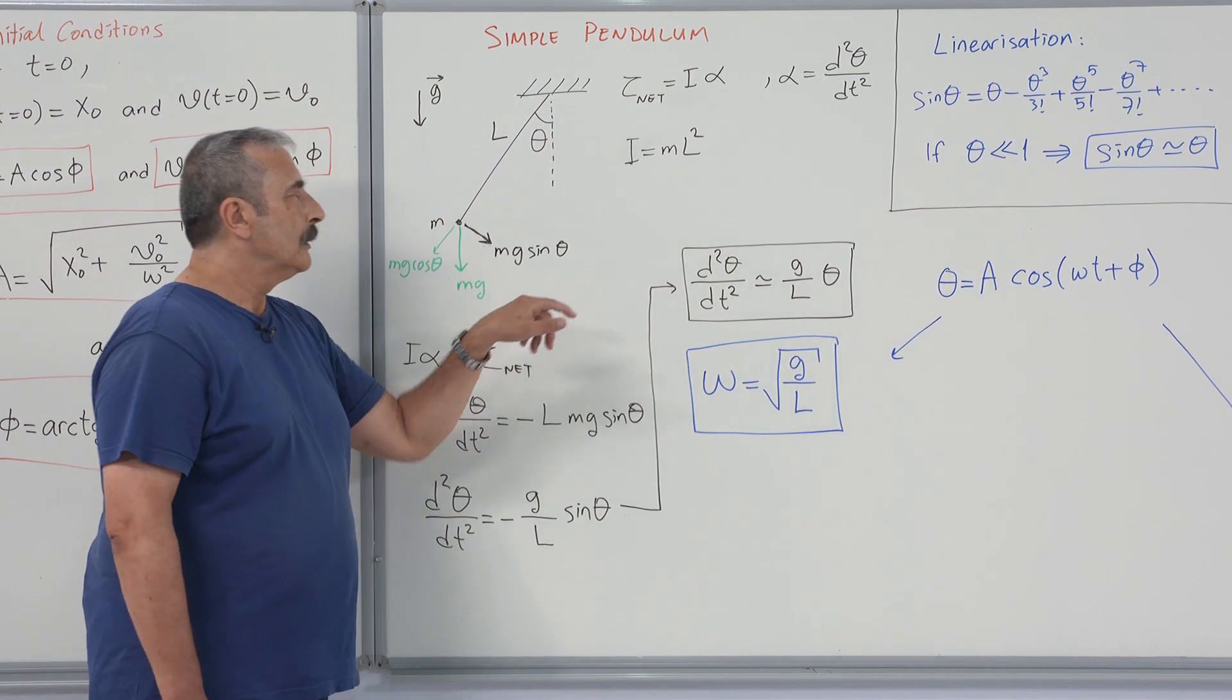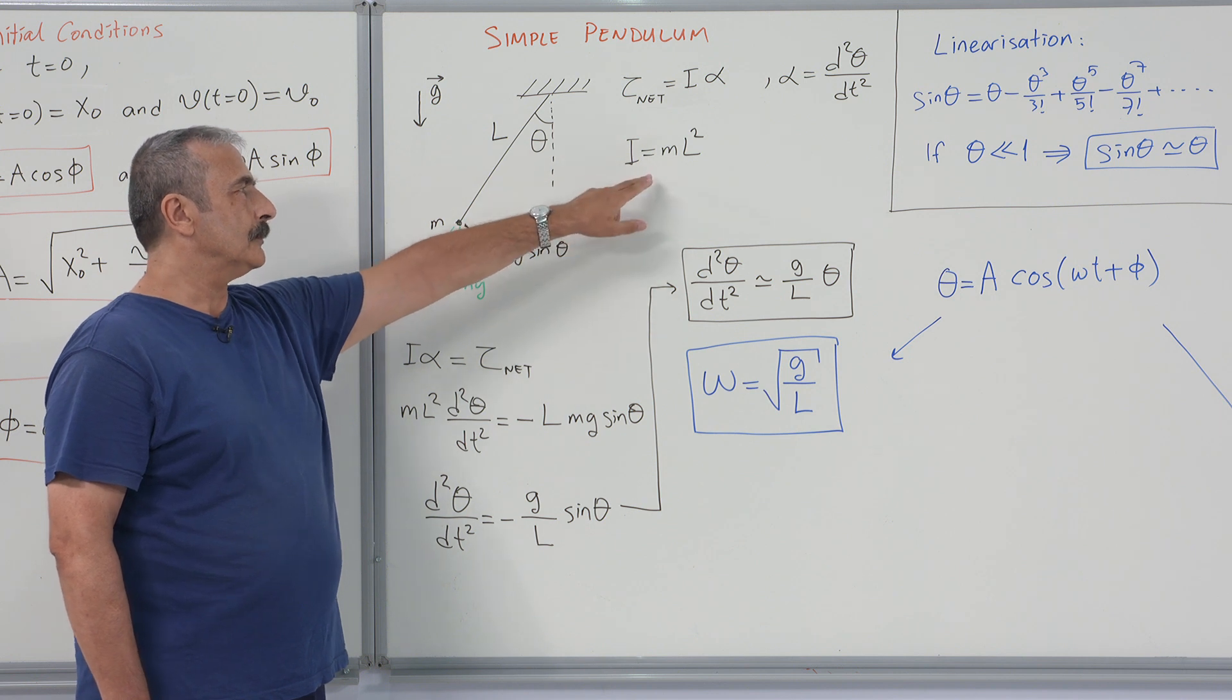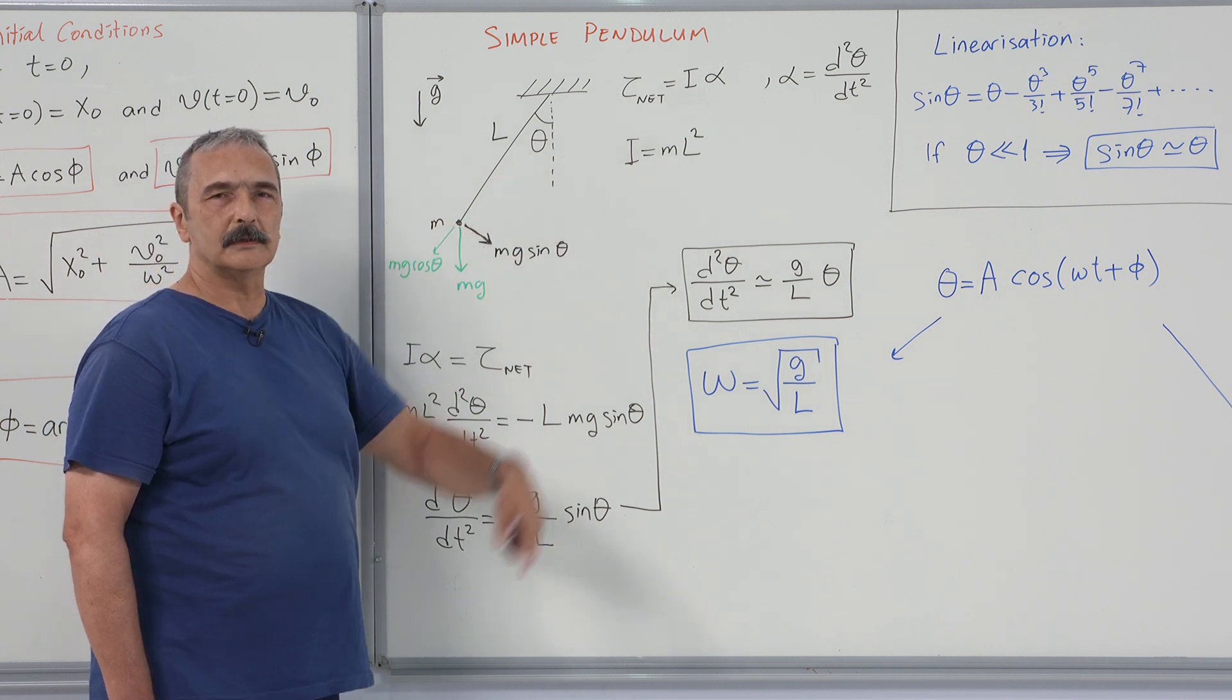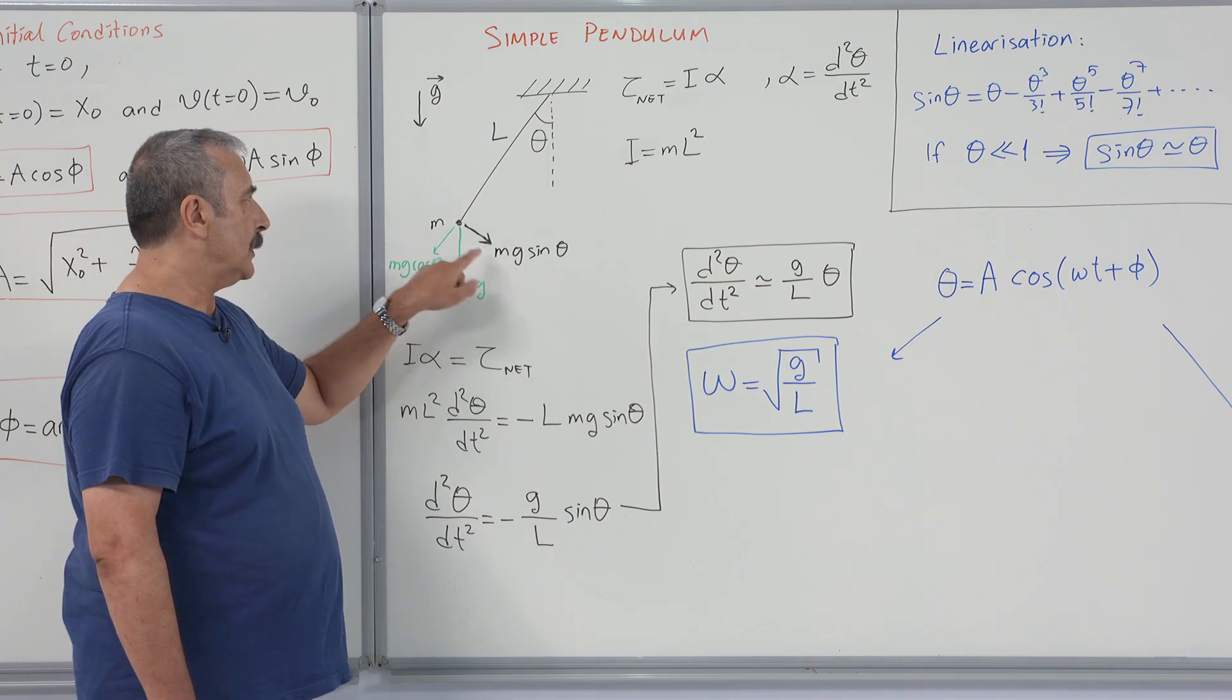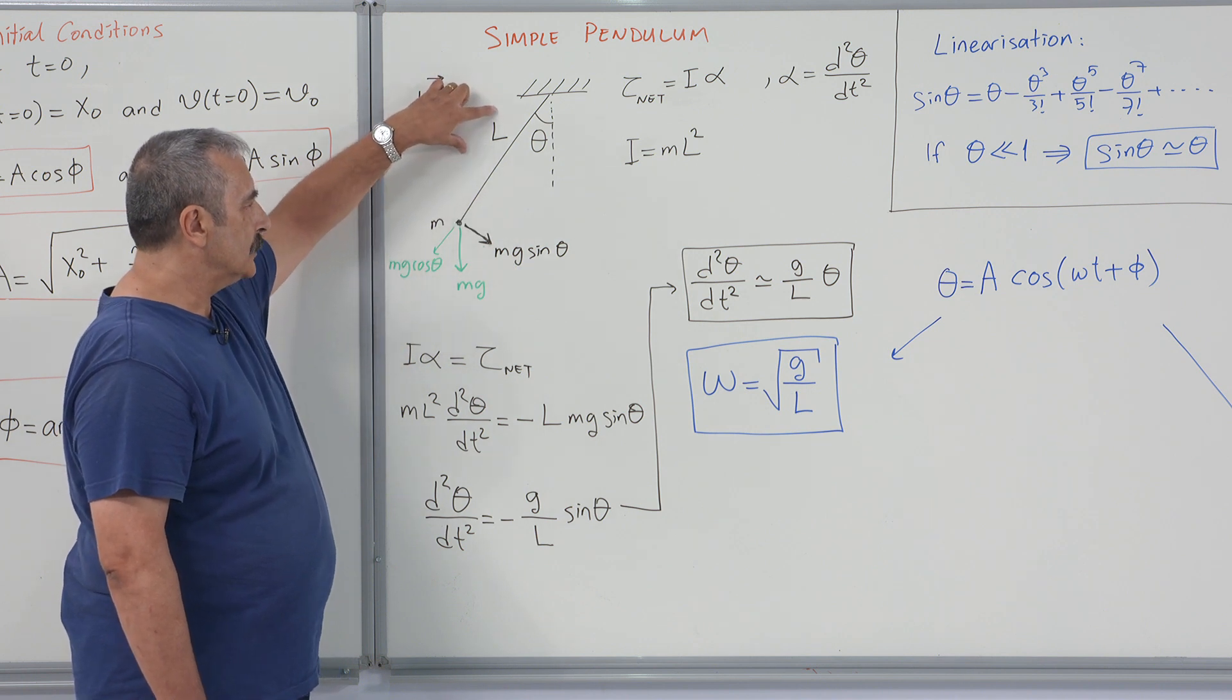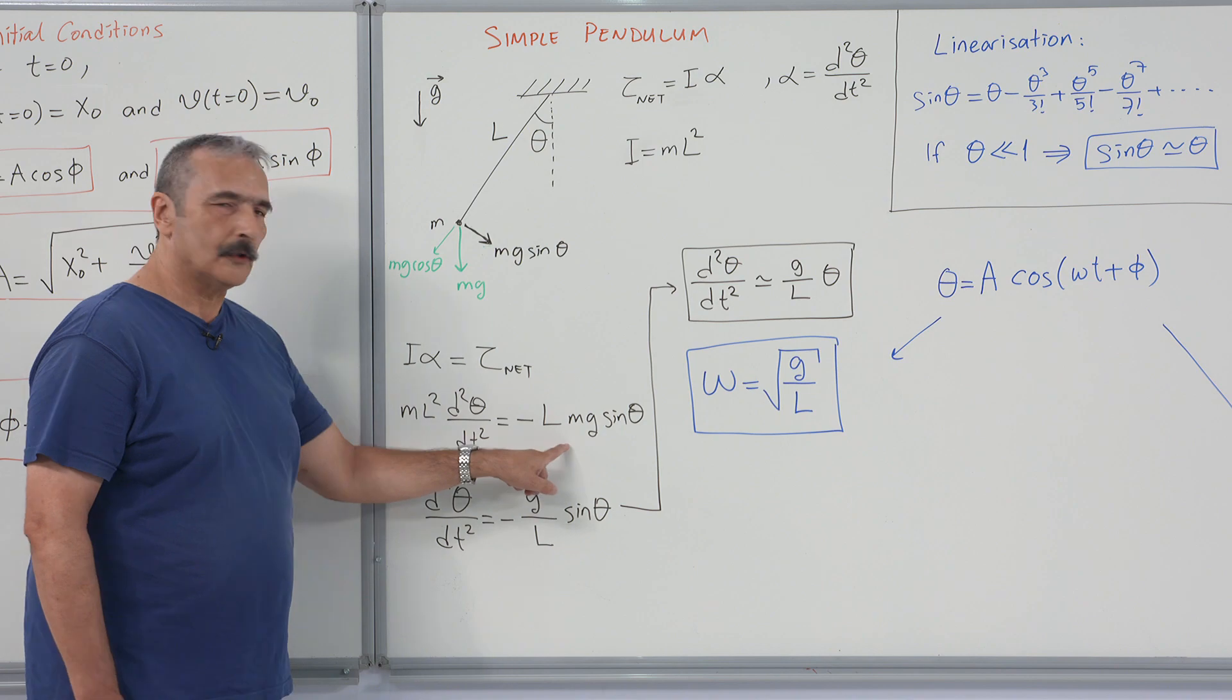For simple pendulum, moment of inertia of the system is mass times its length squared. Gravity's effect on this system is applying torque, the length times mg sine theta. So this is the equation of motion.